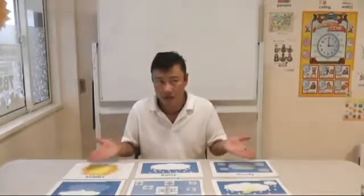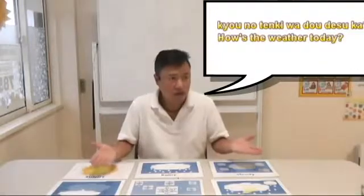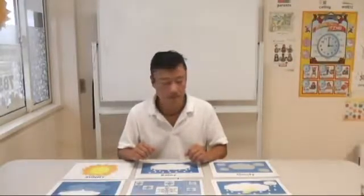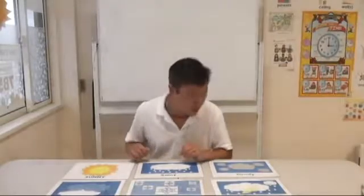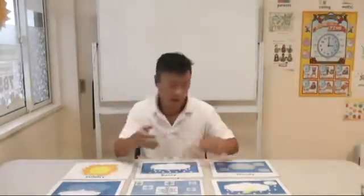After identifying all the cards I would ask 'How's the weather today?' In the very beginning they won't understand what 'how's the weather today' means, so I would teach them 'Kyo no Otenki wa do desu ka' in Japanese — how's the weather today? It's rainy today, so I'll start out with something untrue. Is it stormy? No.